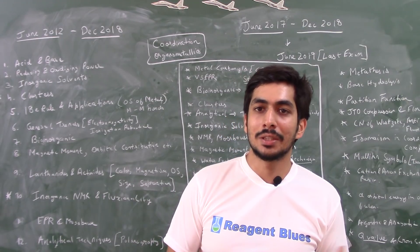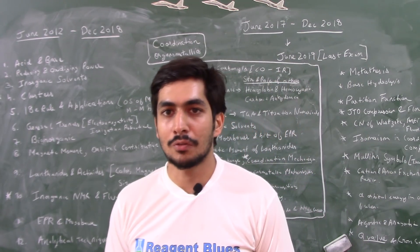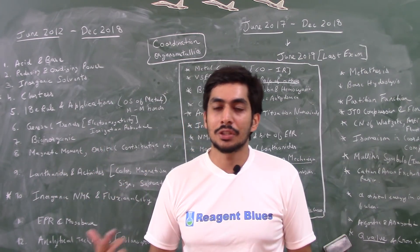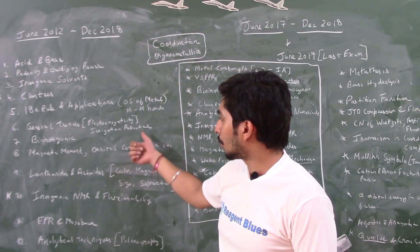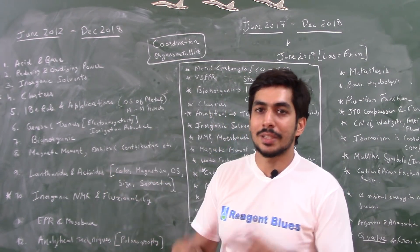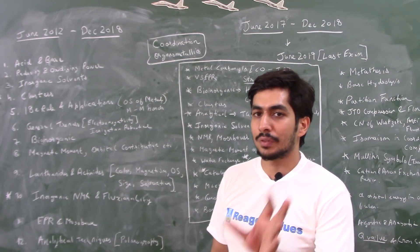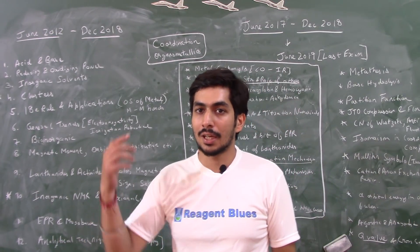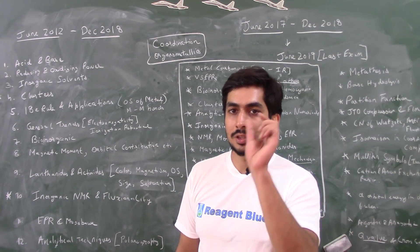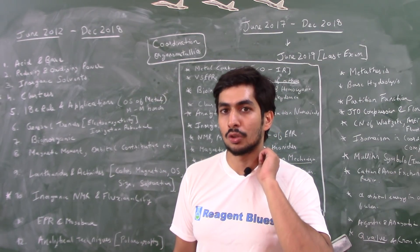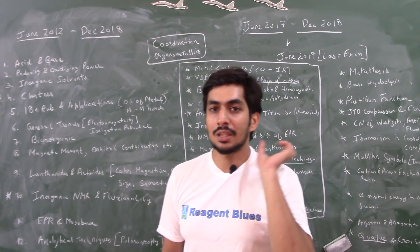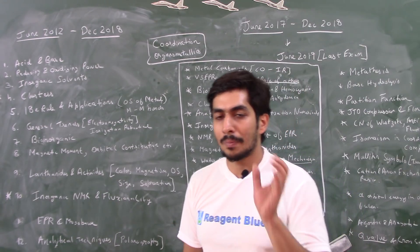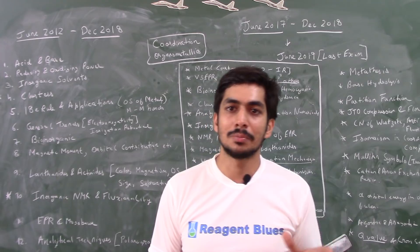From acid-base acidity and basicity, there is definitely one question — even in December 2018 there was one. General trends like electronegativity and ionization potential have produced many questions related to electronic configuration, so you should be aware of the periodic table and electronic configurations, especially for lanthanides and actinides. There are discrepancies in those configurations, so at least for lanthanides you should know them well. I made a video titled 'Magnetism in Lanthanides' covering this.